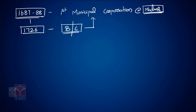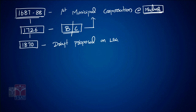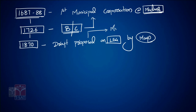Very, very important. Next, in 1870, there was a draft proposal on local self-governance by Mayo, called the Mayo Resolution on local self-governance.